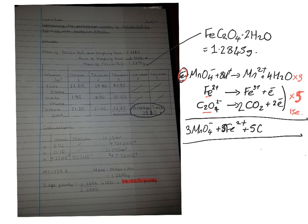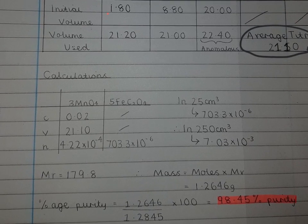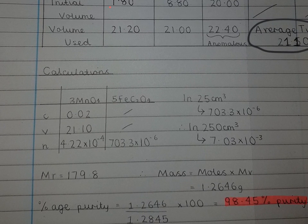So if we now look at Emma's calculation, she's nicely put it into a table to summarize what we've got. You can see that the concentration in moles per decimeter cubed, the molar concentration of the manganate, was 0.02 moles per decimeter cubed. The volume of the solution in centimeters cubed is the average titration volume, which was 21.1.